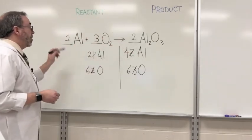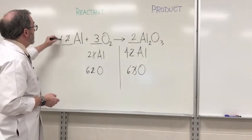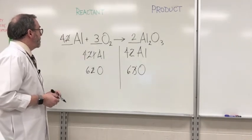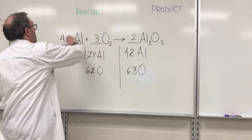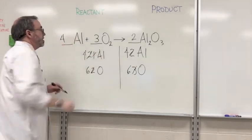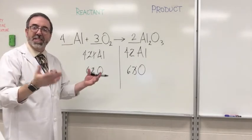So what do we have to do over here to get four aluminums? Just eliminate this, put four like that. So we've got four aluminums, six oxygens, eliminate that, and it's balanced.